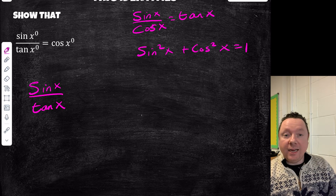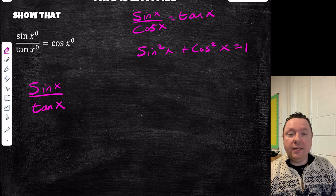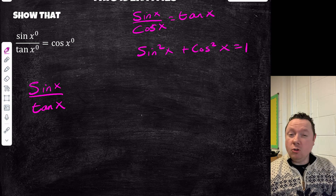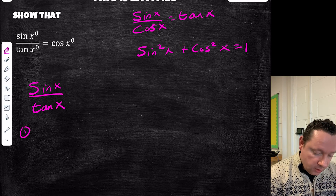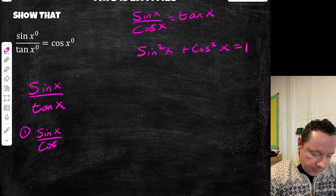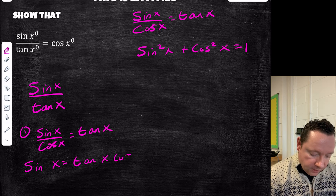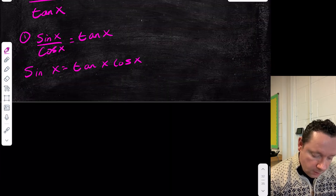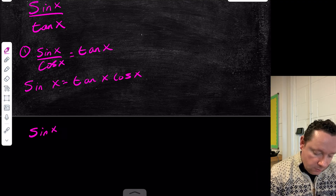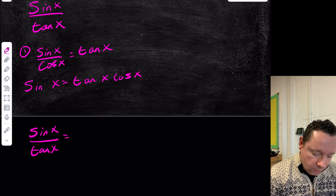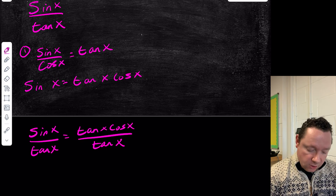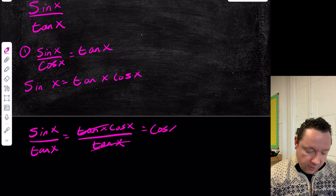Method 1: Since sinx/cosx = tanx, we can rearrange to get sinx = tanx·cosx. Substituting into our expression: sinx/tanx = tanx·cosx/tanx. The tanx on the top and bottom cancel, leaving cosx. That's one option.